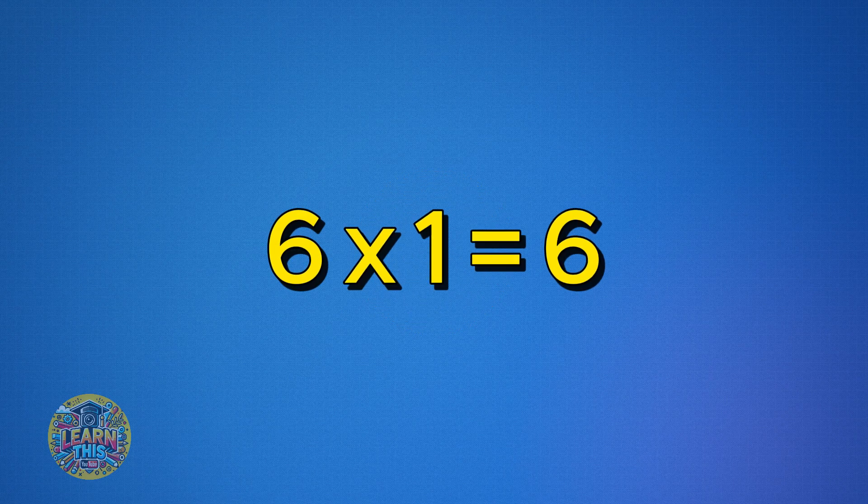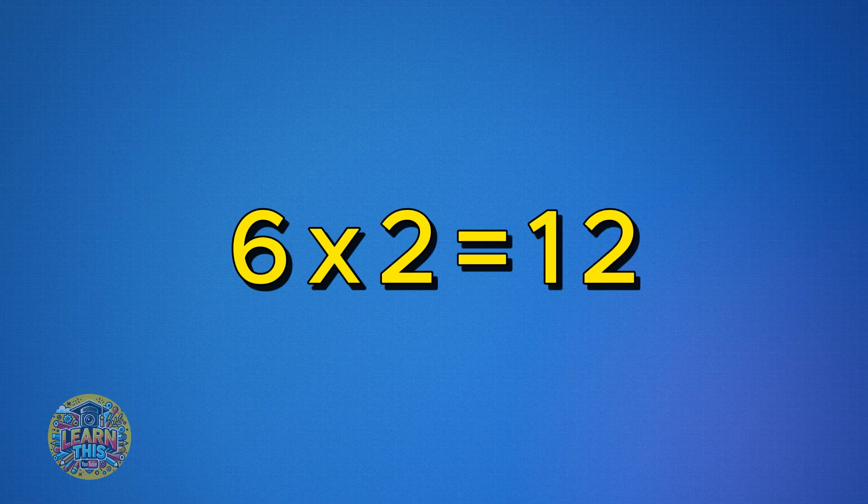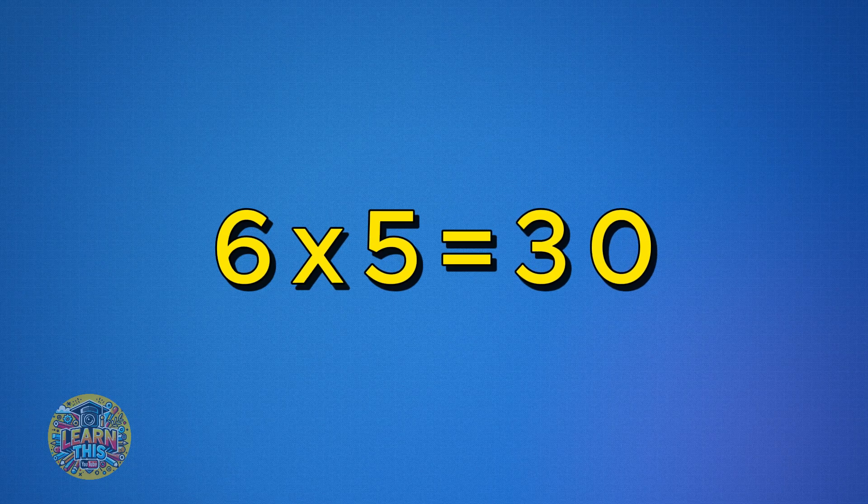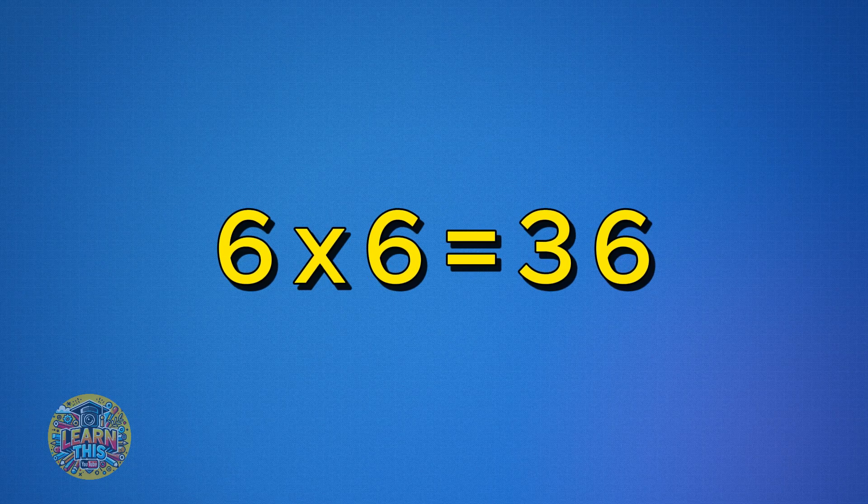Six times one is six. Six times two is twelve. Six times three is eighteen. Six times four is twenty-four. Six times five is thirty. Six times six is thirty-six.